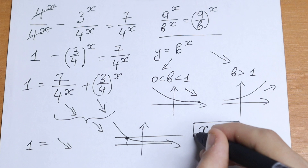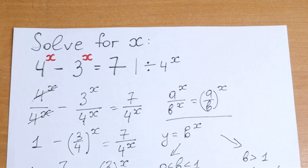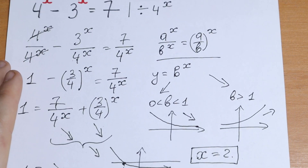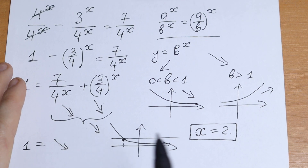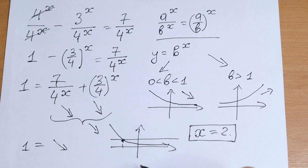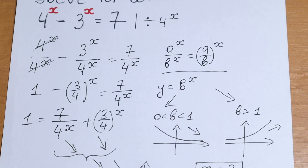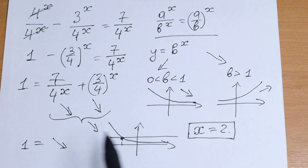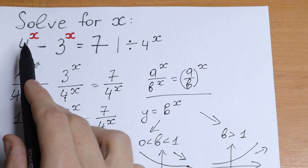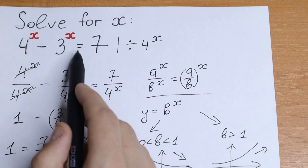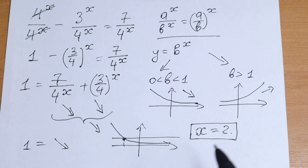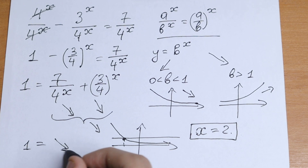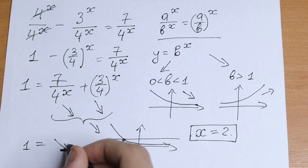Of course, this is not a general method — this is by inspection. If we had, for example, 8 on the right side instead of 7, this method would not work for finding the root. But the method does show why we have only one root: x equals 2. We can verify: 4 squared minus 3 squared equals 16 minus 9, which equals 7. If you still have any questions, write them in the comments. Thank you so much for watching, and see you in the next videos.